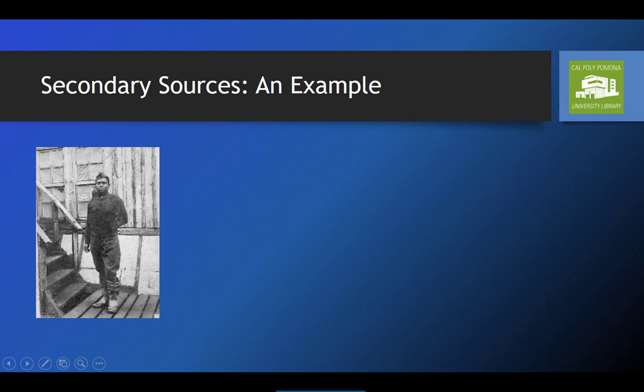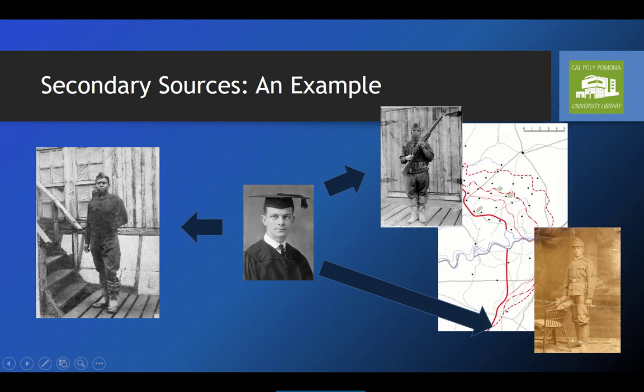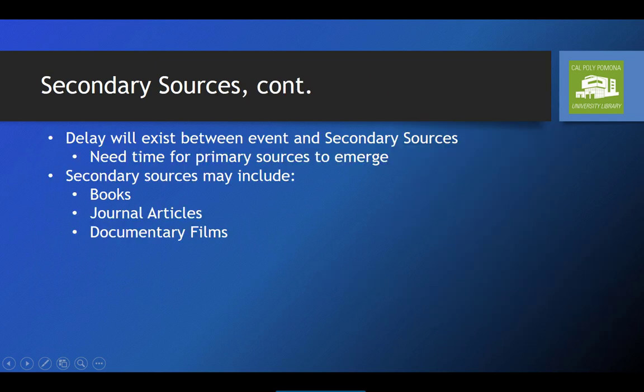Remember our soldier from the primary source example? Now what happens if 20 years after the battle, a historian interviews him, along with many of his comrades and soldiers on the opposite side, and places that battle into the context of the larger war and what happened afterwards? Suddenly you get a much bigger picture of what happened during the battle and why it mattered. As primary sources have to already exist in order to create a secondary source, there will be some delay between an event and the creation of a secondary source about it.